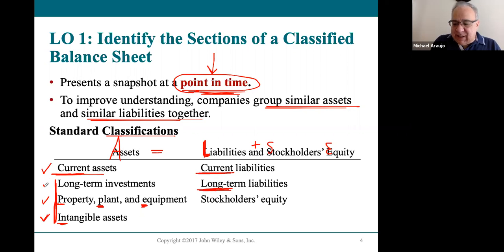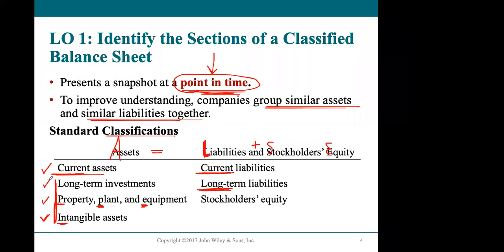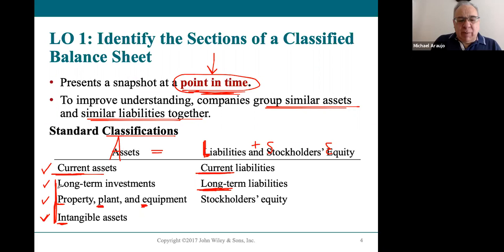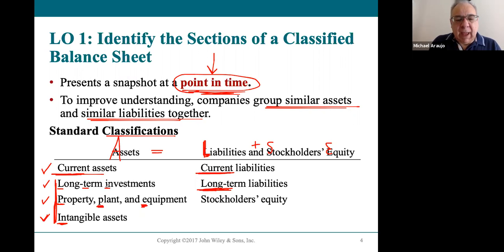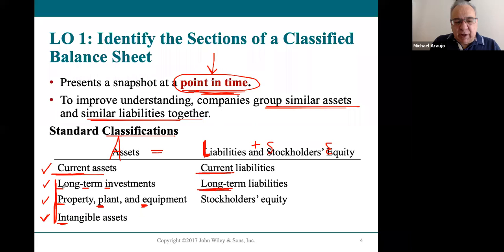Probably the least common of the four classifications is something called long-term investment. A long-term investment is basically an asset that the company owns and plans on keeping for over a year, but they don't use it in the business right now. If they used it in the business, it would be property, plant, and equipment. But because they own it without using it currently, we use this other classification: long-term investment.